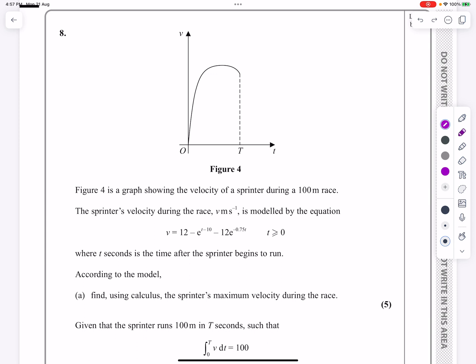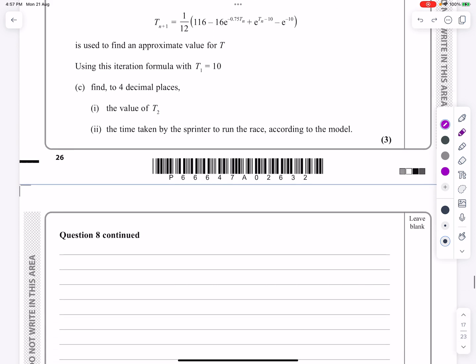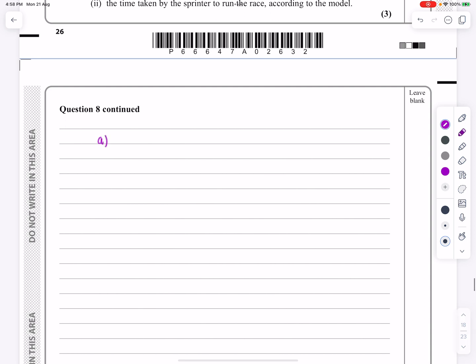Figure 4 is a graph showing the velocity during a 100m race. The sprinter's velocity during the race is modeled by the equation v = 12 - e^(t-10) - 12e^(-0.75t), t ≥ 0, where t seconds is the time after the sprinter begins to run and it says find using calculus the maximum velocity.